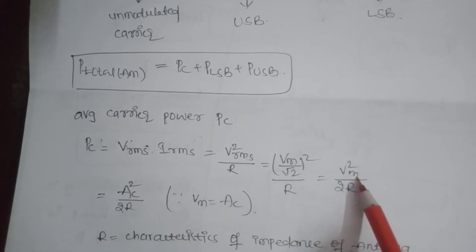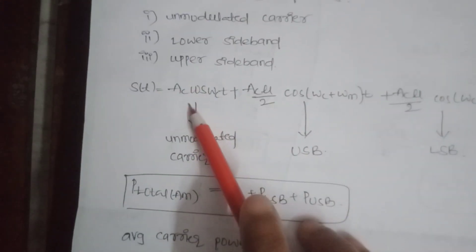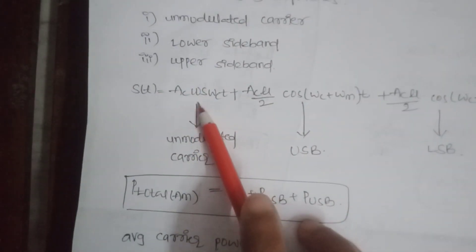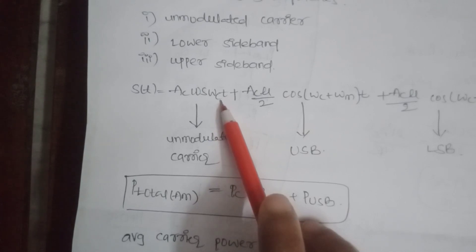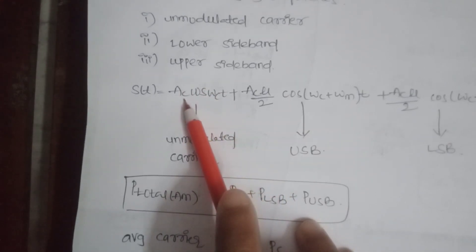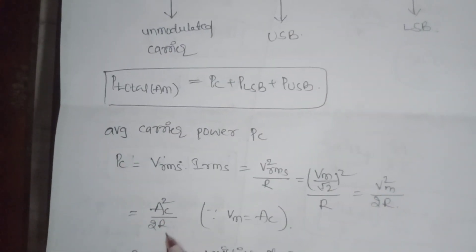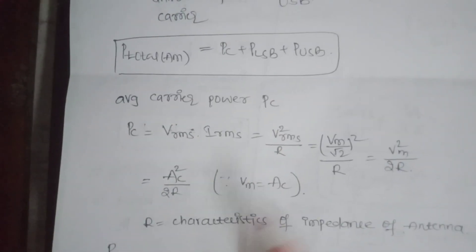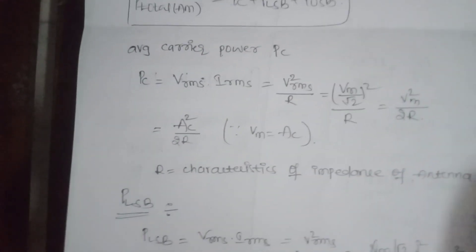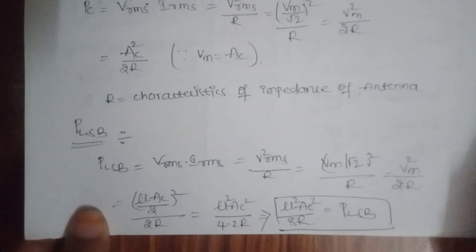VM is the amplitude of the signal. Looking at the carrier component AC·cos(ωc·t), the amplitude of this signal is AC. That is why PC = AC²/(2R).